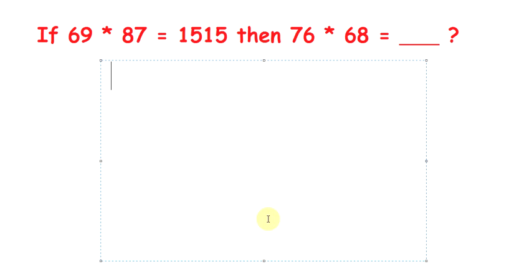Hi, this video is an example for number related tests in quantitative aptitude. The question is: if 69 times 87 equals 1515, then 76 times 69 equals what?